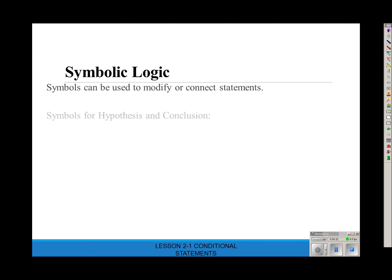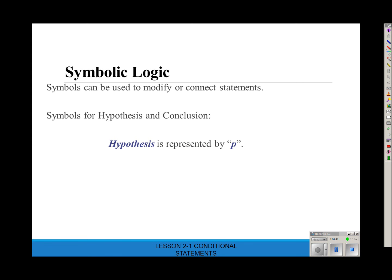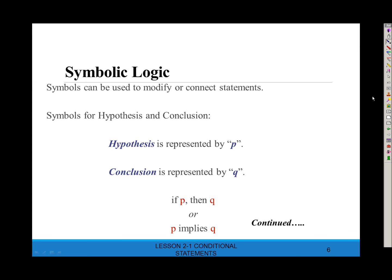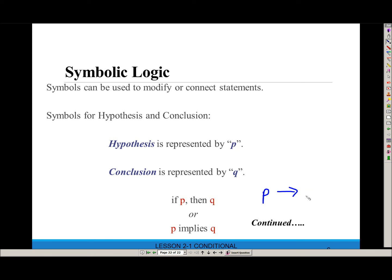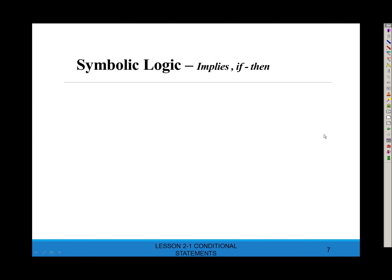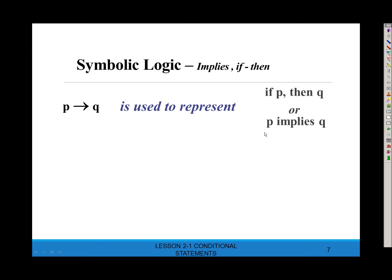Here are some symbols. You can use symbols to modify or connect statements. The hypothesis typically uses the letter P, and the conclusion typically uses the letter Q. So you might say 'if P, then Q,' or 'P implies Q,' or just 'P → Q' with an arrow. All of those mean the same thing and use P and Q instead of writing out the whole statement.